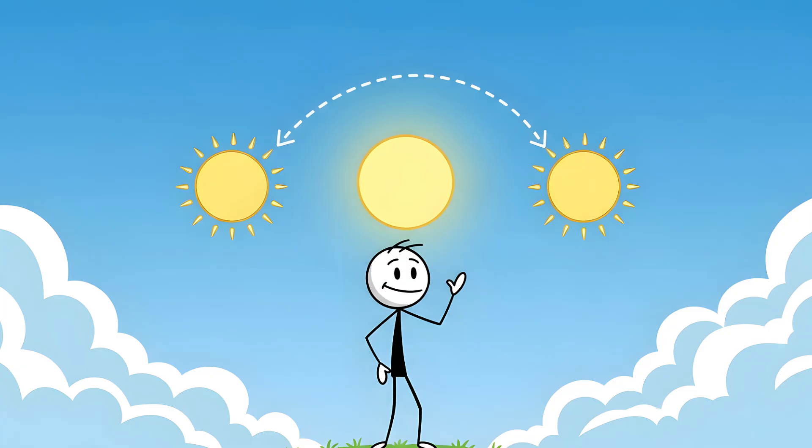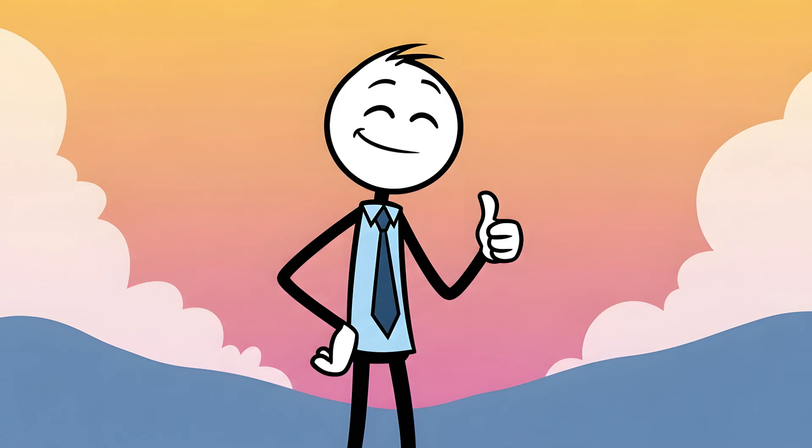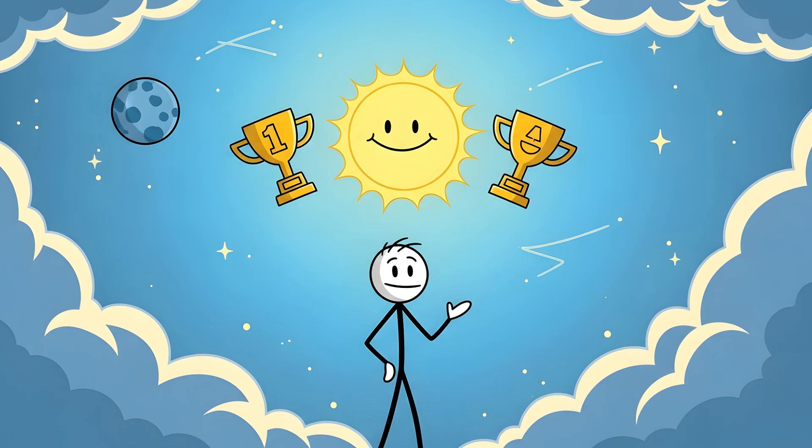The result is two bright mock suns, shimmering at a perfect 22-degree angle from the original. They're not ghosts. They're just geometric echoes of light. A beautiful, large-scale optical illusion. So no, you're not going crazy. The sky is just showing off its basic geometry homework, creating a cosmic participation trophy so the real sun doesn't feel lonely.